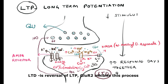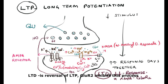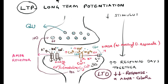Long-term depression (LTD) is just the reverse of LTP, where the neurotransmitter binds with the glutamate 2 receptor, which inhibits AMPA receptors.